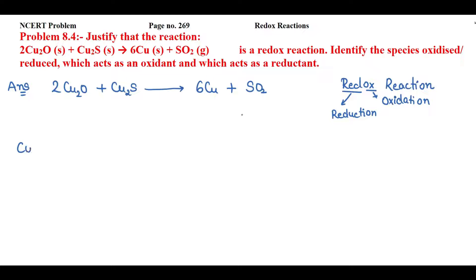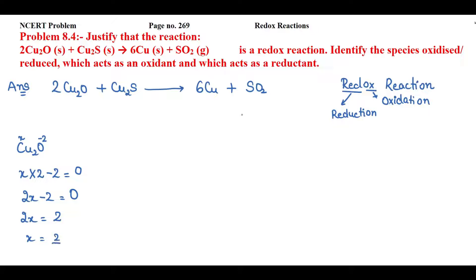Firstly, I will look at cupric oxide (Cu₂O). The electronegativity of oxygen is more than copper, so the oxidation state of oxygen will be minus 2. I will assume the oxidation state of copper as x. This compound is neutral, so the overall charge will be 0. So x × 2 + (−2) = 0, giving 2x = 2, so x = +1. The oxidation state of copper in Cu₂O is +1, and the oxidation state of oxygen is −2.